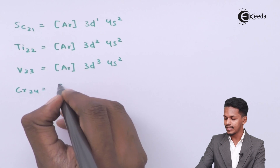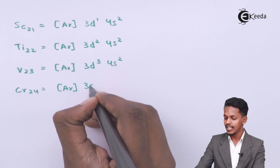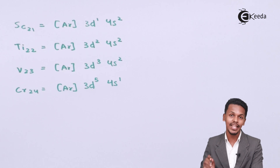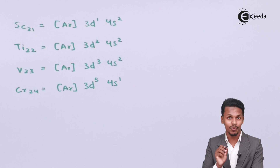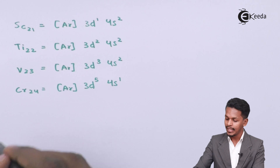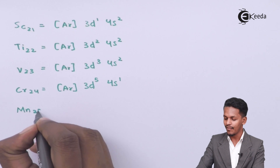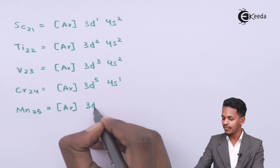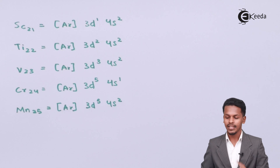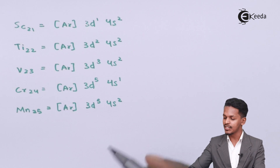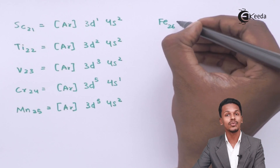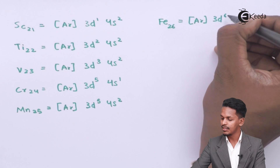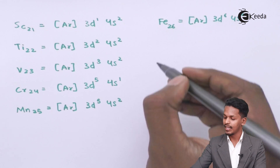Chromium (atomic number 24): [Ar] 3d⁵ 4s¹ — not 3d⁴ 4s², which is an abnormal electronic configuration I will explain in the next topic. Manganese (atomic number 25): [Ar] 3d⁵ 4s². Iron (atomic number 26): [Ar] 3d⁶ 4s².